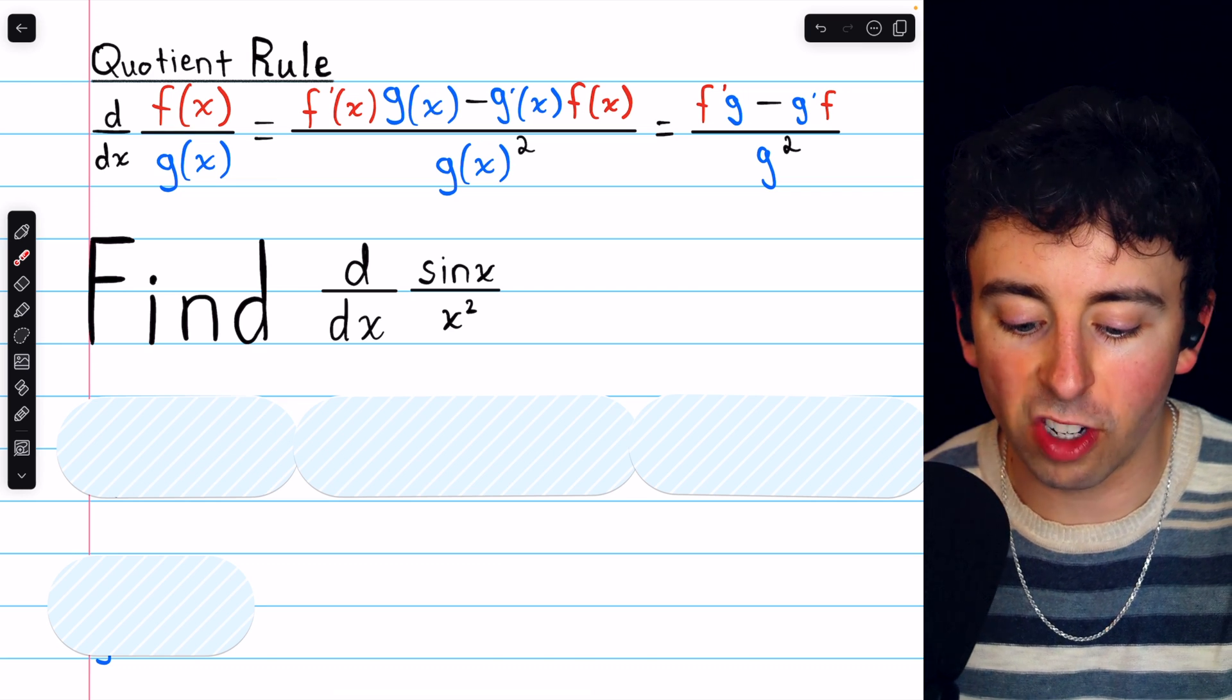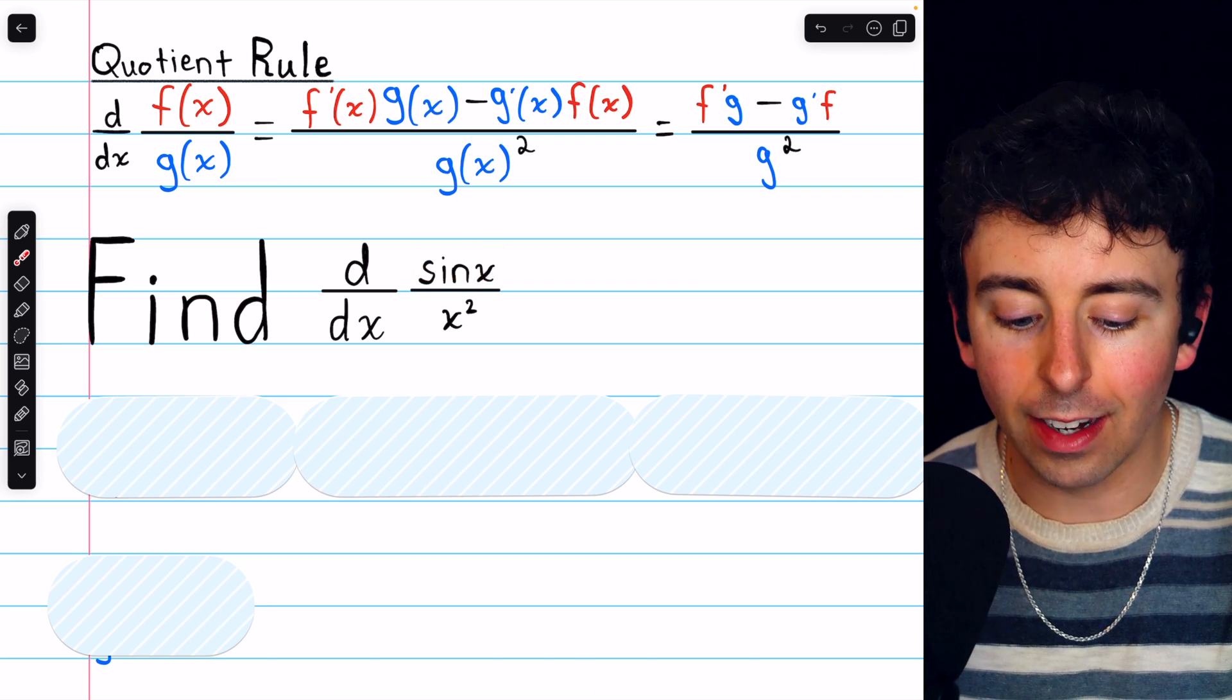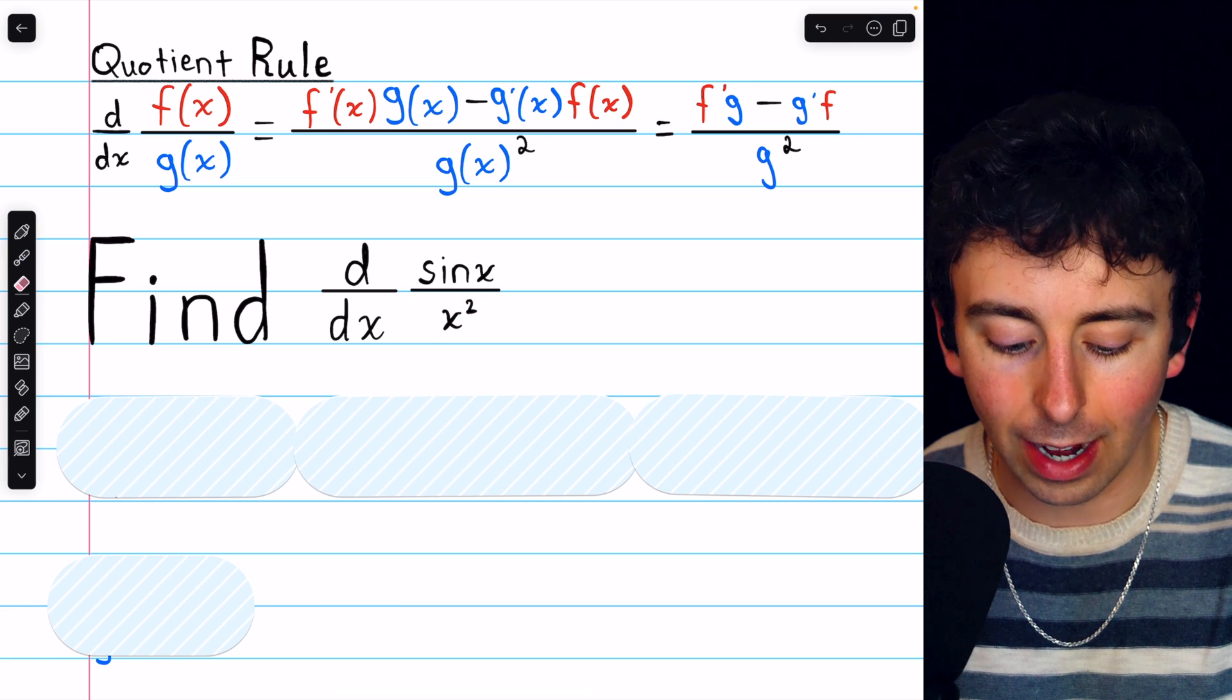f is the numerator, which in our case is sine x, and g is the denominator, which in our case is x squared.